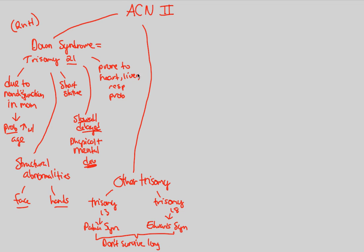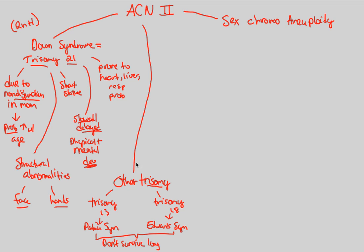We'll continue and finish our discussion on abnormalities in chromosome number by looking at something very common and important to understanding sex from a genetic standpoint. There are also abnormalities in sex chromosomes, specifically known as sex chromosome aneuploidy. Aneuploidy means an abnormality in chromosome number. We applied trisomy and non-disjunction earlier, and we know these are all deviations from our normal disomy individual.